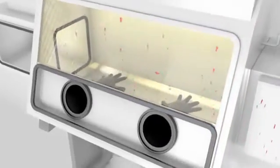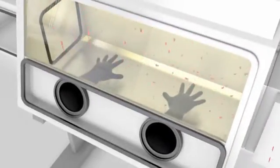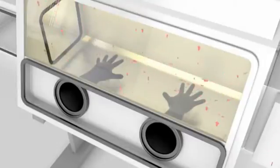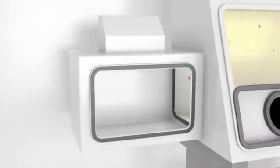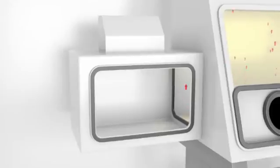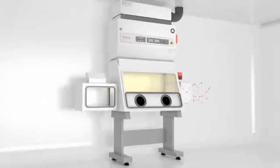Access to the work surface is by means of heavy duty rubber gloves attached to ports in the cabinet door. The class 3 cabinet has a pass through box attached that can be sterilised and equipped with a HEPA filtered exhaust or a double door autoclave can be connected for the decontamination of all materials entering or exiting the cabinet.